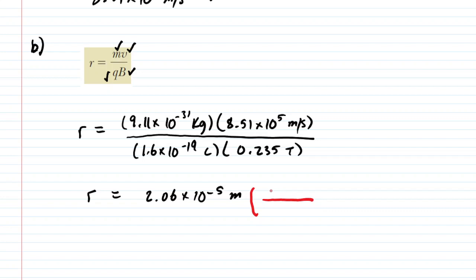We know that one micrometer is equivalent to 10⁻⁶ meters. If we multiply by that conversion factor the meters will cancel out, changing it into micrometers for us. We end up getting 20.6 micrometers. This is the correct answer to part B.